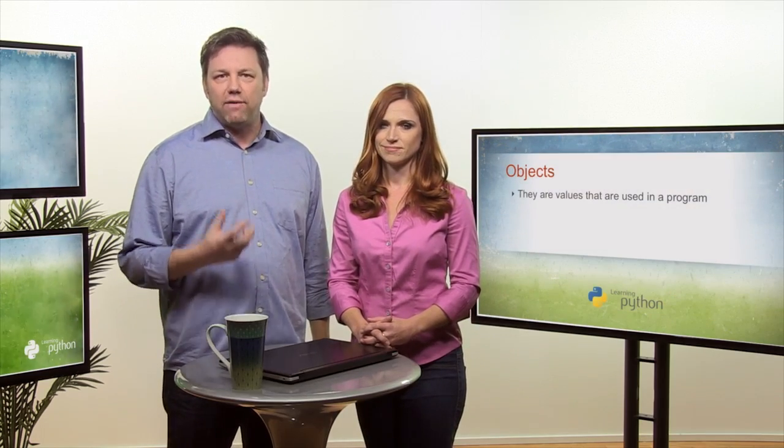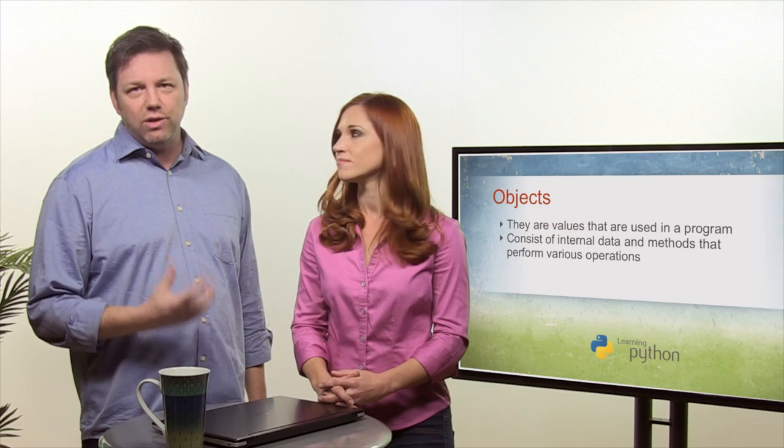So all values that are used in a program are called objects. An object consists of internal data and methods that perform various kinds of operations involving that data. Now we have already used objects and methods while working with built-in types such as strings and lists.